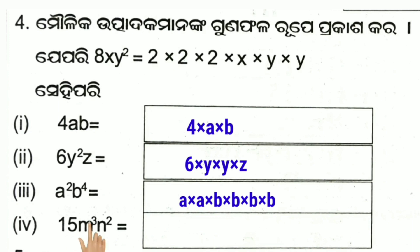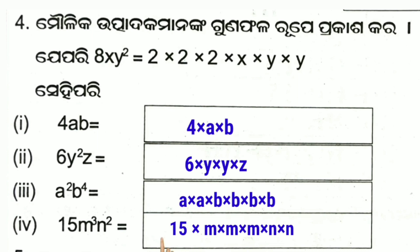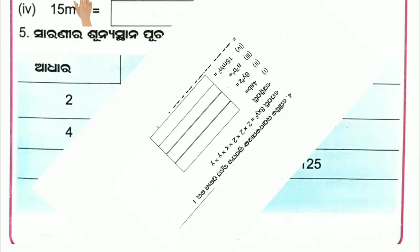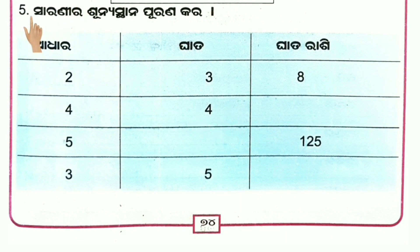15m cube n square: 15 into m into m into m, n square means n into n. y to the power 5 — this is the 5th number.